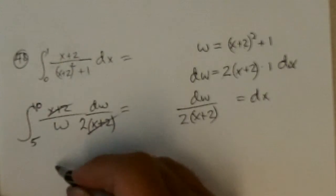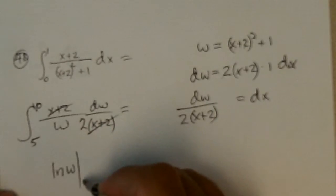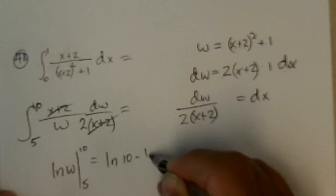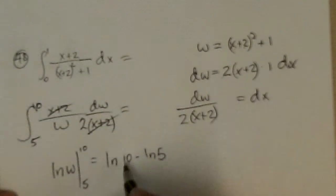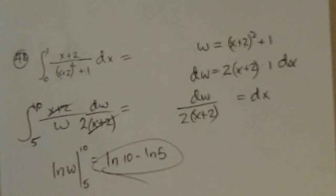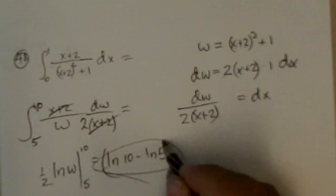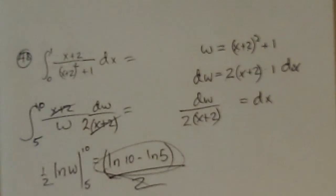And 1 over w integrates to ln w, evaluated from 5 to 10, which is ln 10 minus ln 5, and that's the exact answer. Oh, I forgot the half, so all of this divided by 2. Okay, and that's 48.